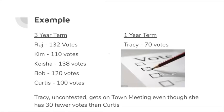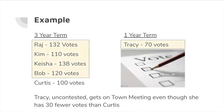So let's look at an example. Under this example, there are five people running for a three-year term — Raj, Kim, Keisha, Bob, and Curtis — and one person running for a one-year term, Tracy. And here's the vote count, and here's how it comes out. Raj, Kim, Keisha, and Bob, who are the highest vote getters for the three-year contest, get on to town meeting. And Tracy, who's uncontested, gets on for the one-year slot, even though she has 34 votes and Curtis does not. Maybe she's especially controversial, or maybe there's some other reason.